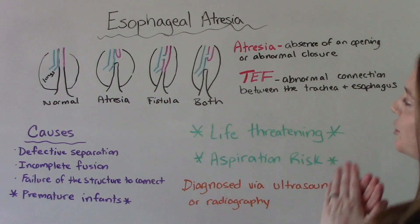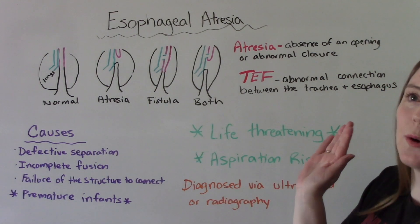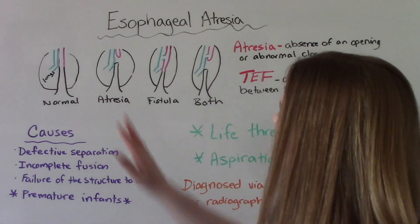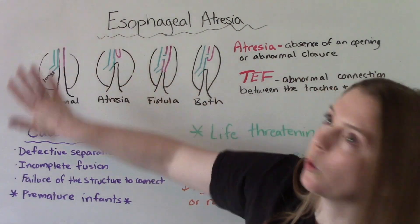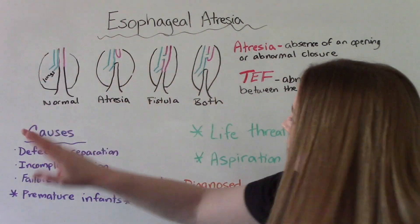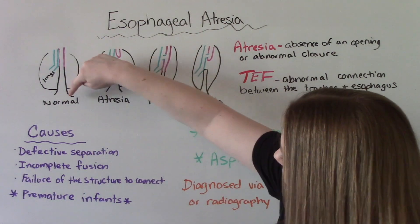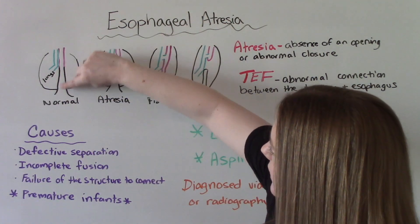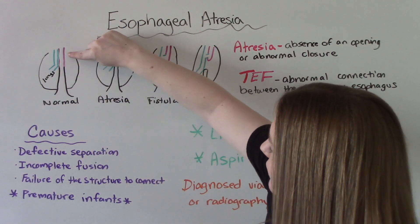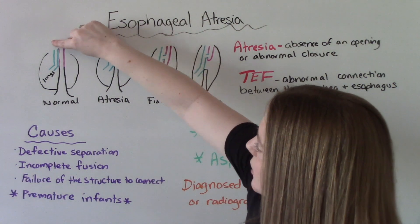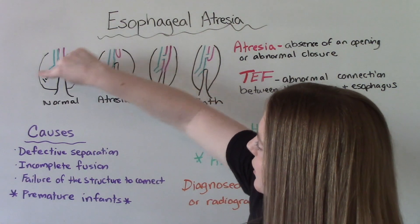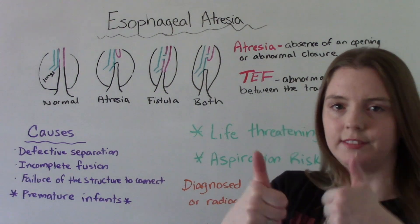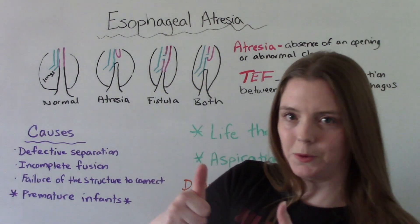I've tried my best to draw this out to make it a little bit easier to understand. So this is normal anatomy: this is our lungs, this goes down to our stomach, the pink here is our esophagus, and the blue here is our trachea. Trachea goes to the lungs, esophagus goes to the stomach — that's what we want.